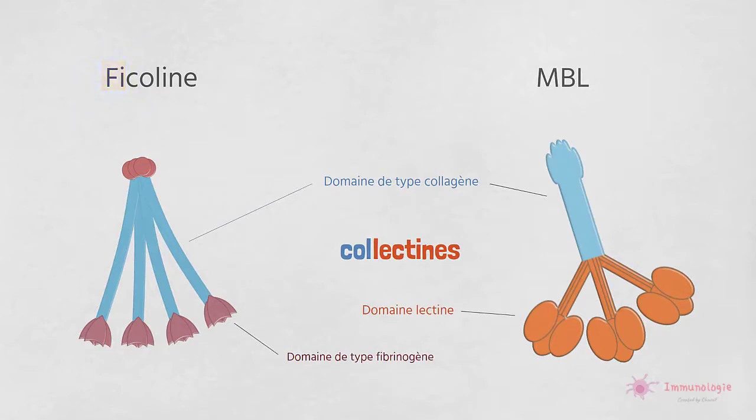La famille des ficolines comprend L et H ficolines qui sont des protéines plasmatiques, alors que M ficoline est essentiellement tissulaire.